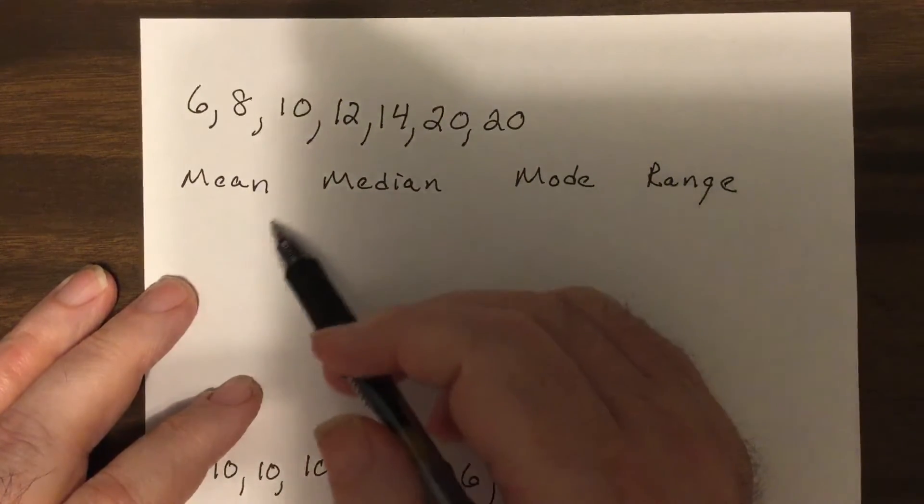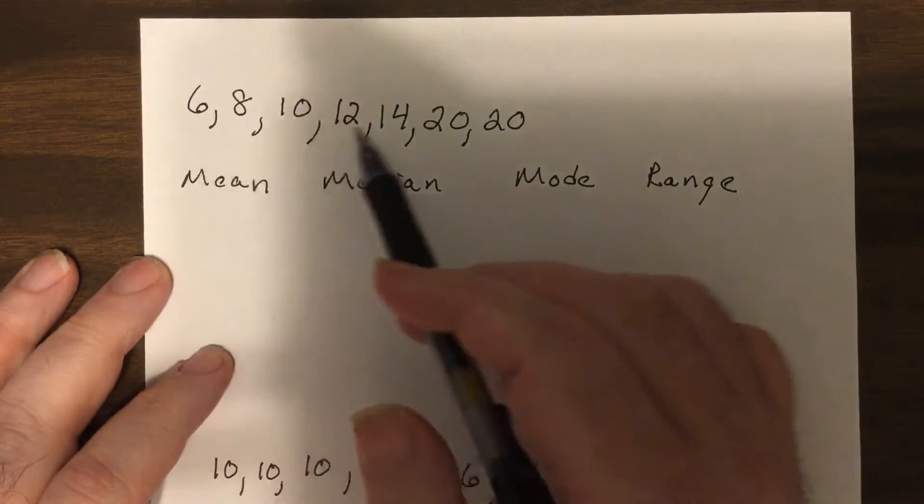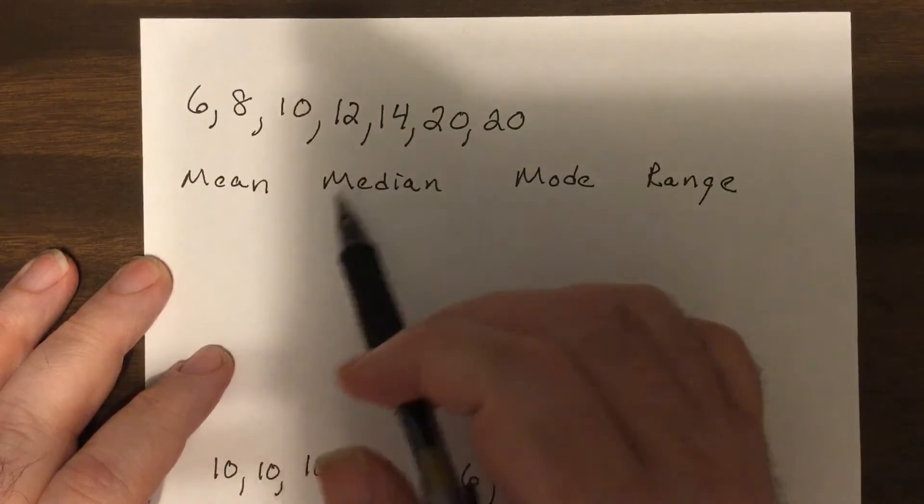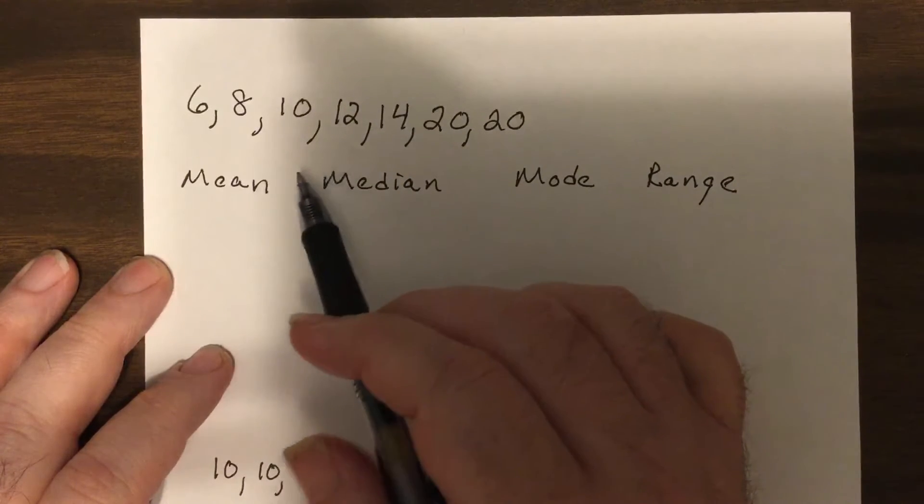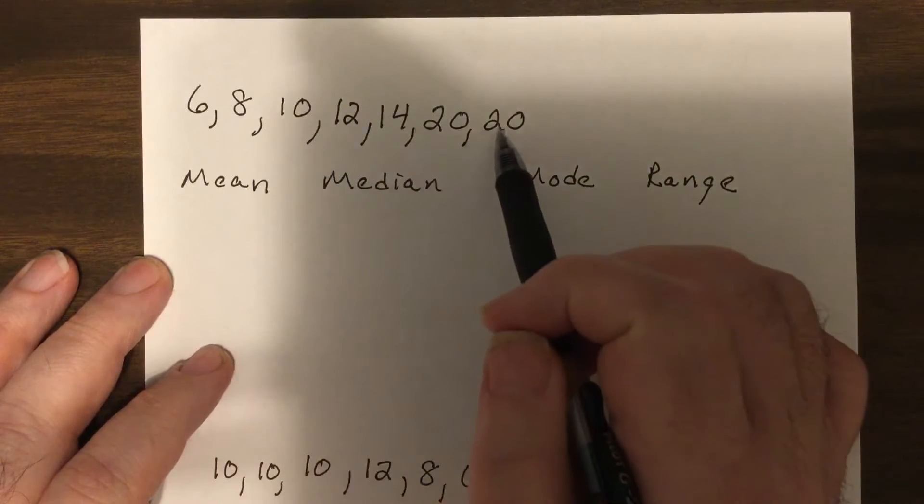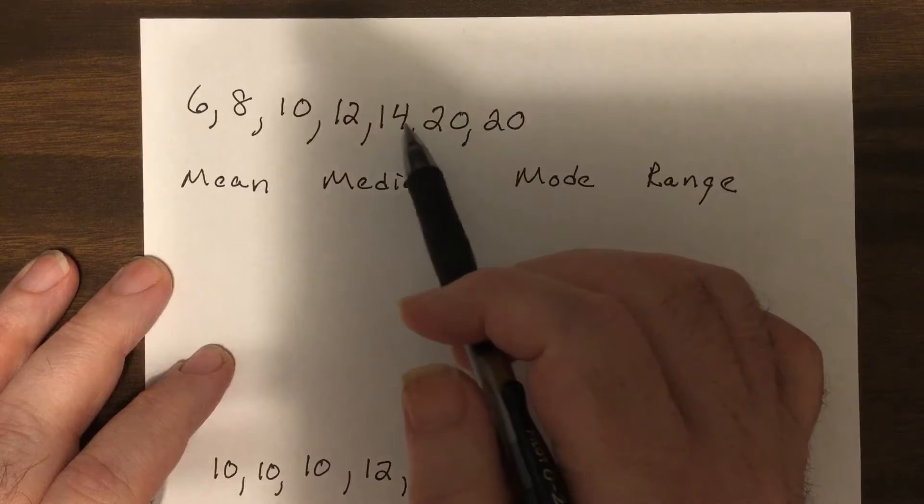Mean, median, mode, and range. Mean is when you add up all the numbers and divide by the number of numbers, so you think of finding your grade, finding the percent. So let's see, we got 20, 20, that's 40. 14 and 6 is 20, so it's 60.